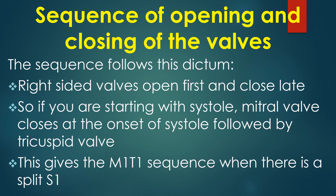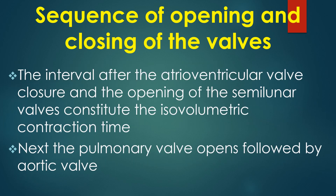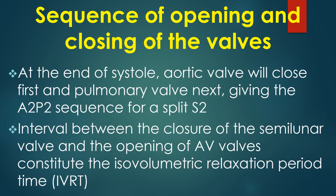Starting with systole, the mitral valve closes at the onset of systole followed by the tricuspid valve. This gives the M1-T1 sequence when there is a split first heart sound. The interval after atrioventricular valve closure and before opening of the semilunar valves constitutes the isovolumetric contraction time. Next, the pulmonary valve opens followed by the aortic valve. At the end of systole, the aortic valve closes first and the pulmonary valve next, giving the A2-P2 sequence for a split S2.